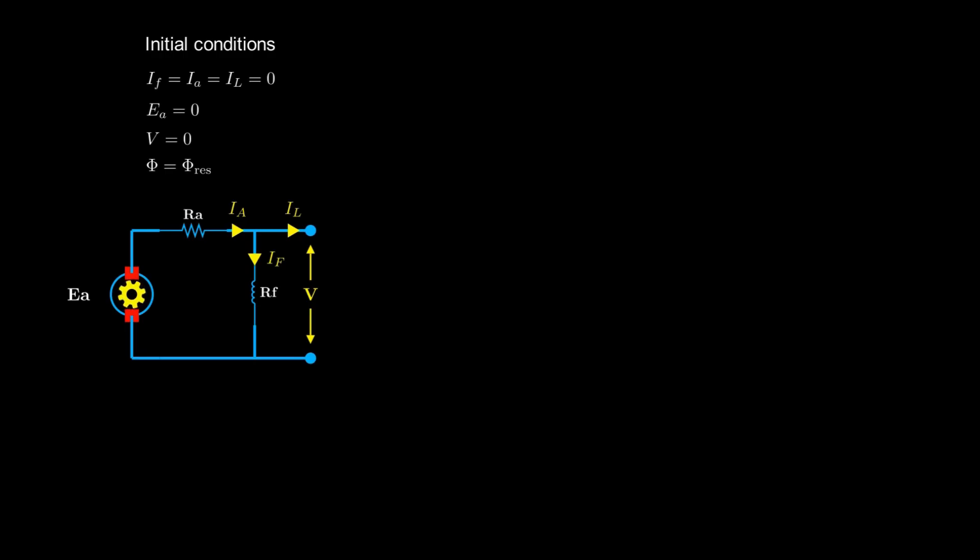When we rotate the armature at a constant speed, the conductors cut through this initial small residual flux. This small voltage causes a tiny current to flow through the shunt field winding.